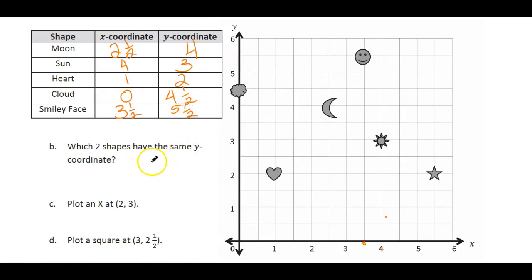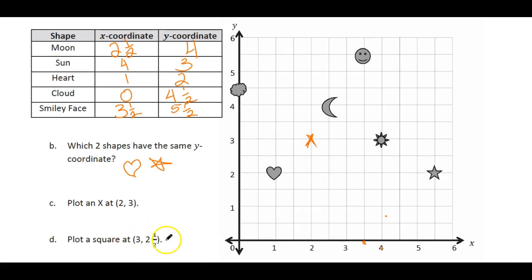Let me take a look here. Which shapes have the same, two shapes have the same y coordinate? So there's going to be two that are on the same height on the y, and it looks like you've got a heart and the star on the two line on the y-axis. So we'll make a heart, so you get to do some drawing on this, isn't this great? Haha, star. Plot an x at point two three. So we start here, we walk one two, and then we fly three. Here's one, two, three, and we're going to plot an x right there based on two three. Now it says plot a square at three and two and a half. So we're going to walk over to the three and we're going to fly up two and a half and we're making a square there. There's our square right there.